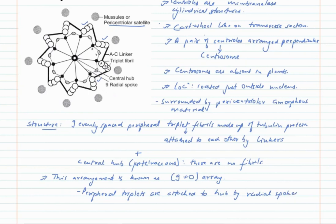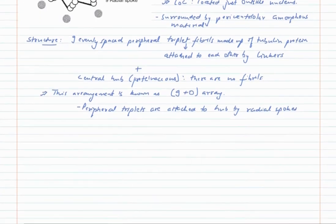So this is the structure of a centriole or centrosome. Centrioles are self-duplicating units; that is, they do not depend on signals from the nucleus to divide.